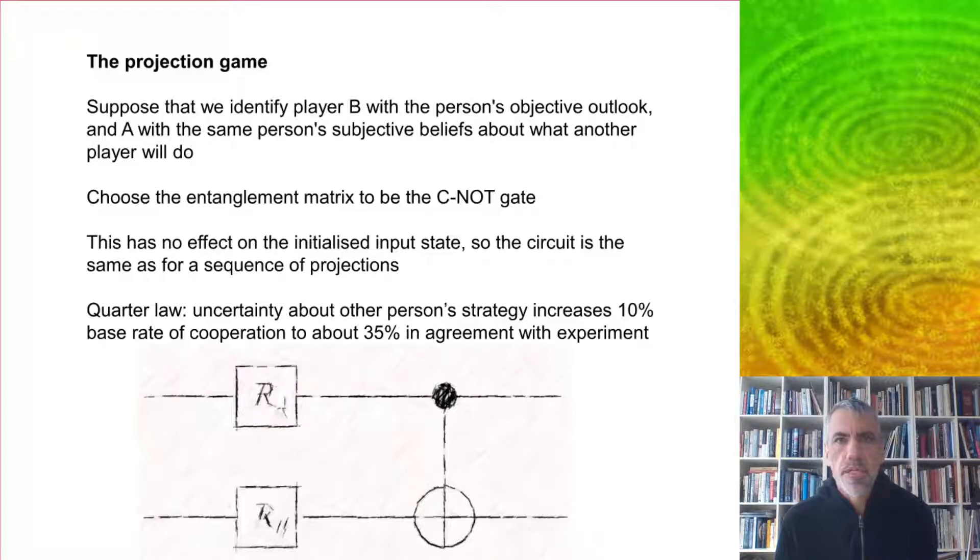Another interpretation is to identify player B with the person's objective outlook. This is a person thinking about their own strategy, but they're also going to have beliefs about what the other person is going to do.